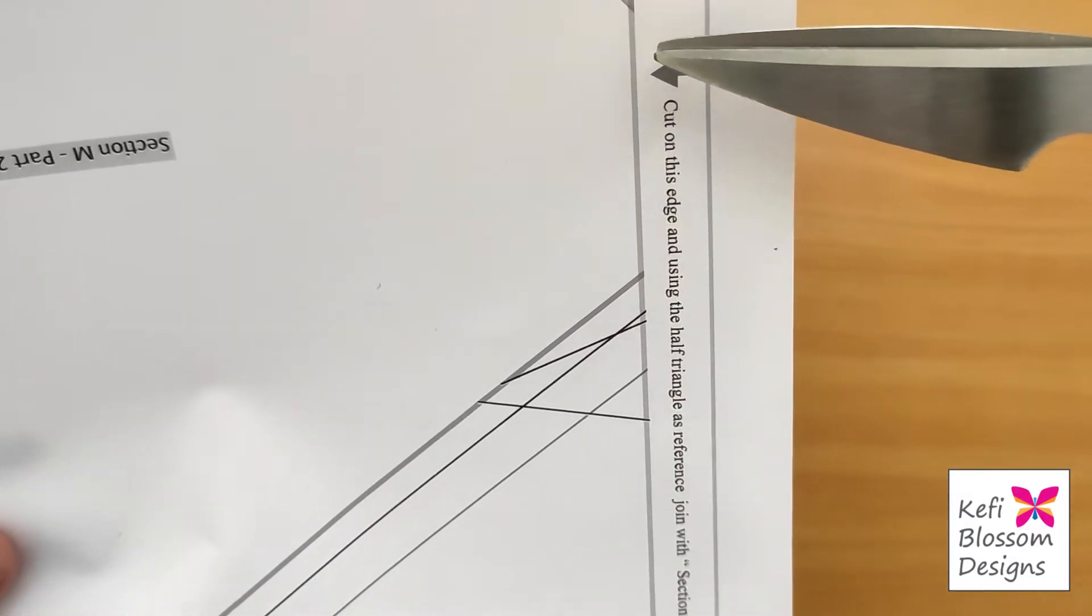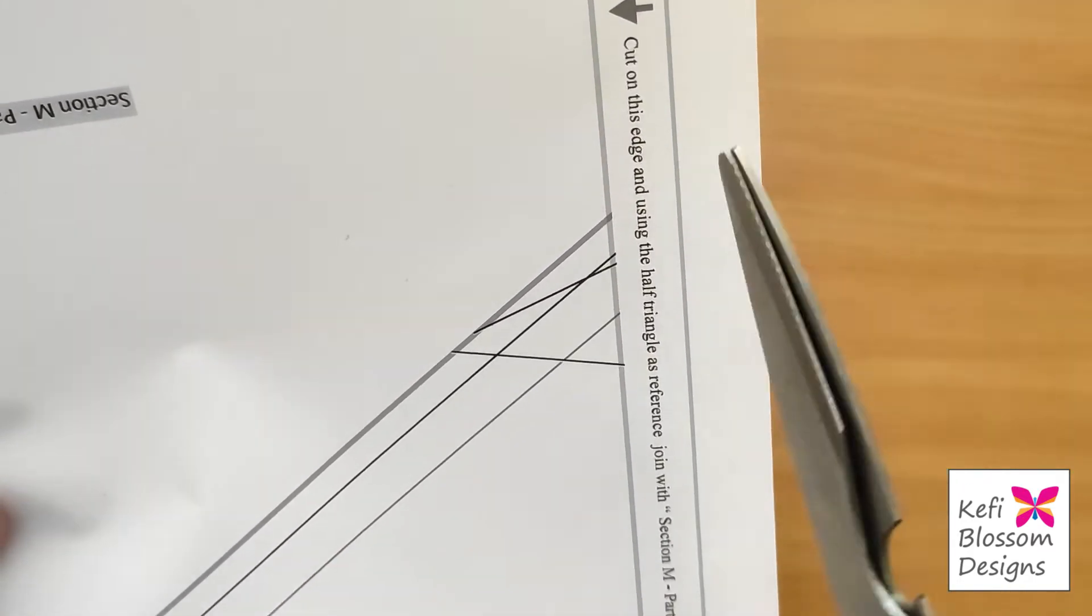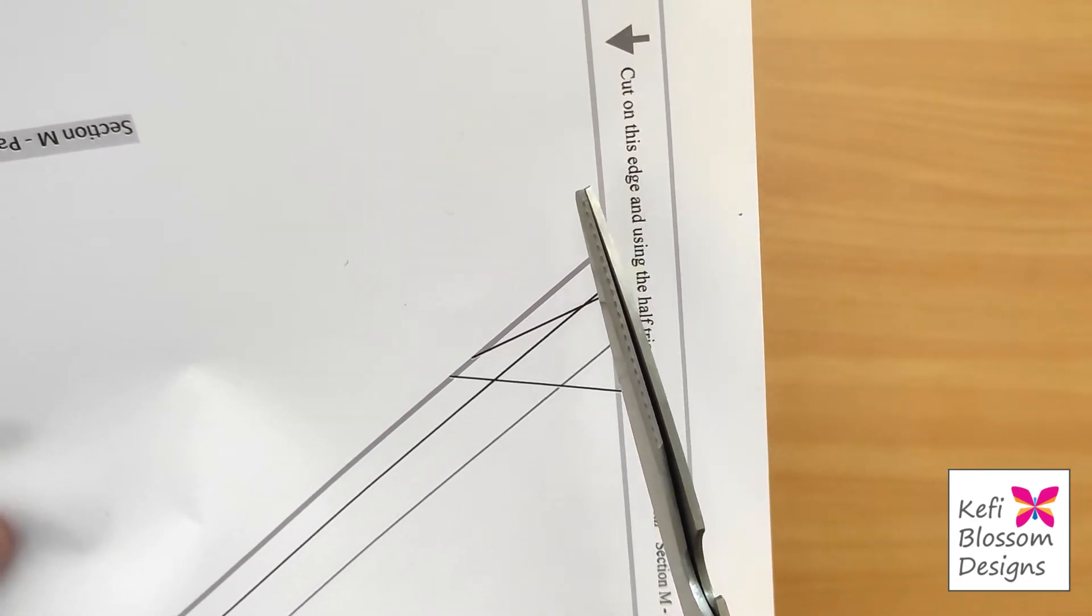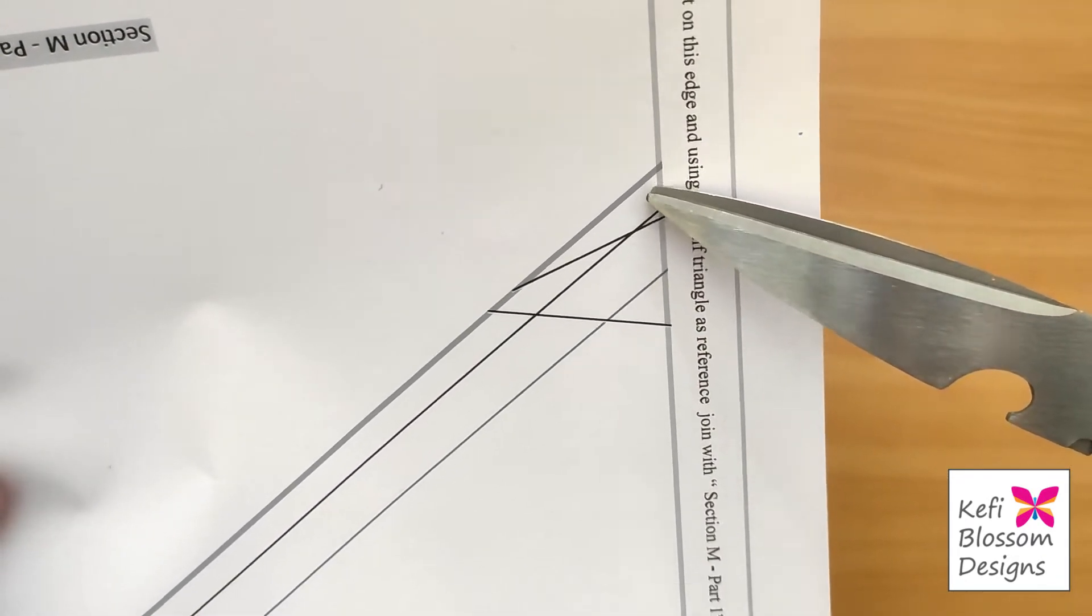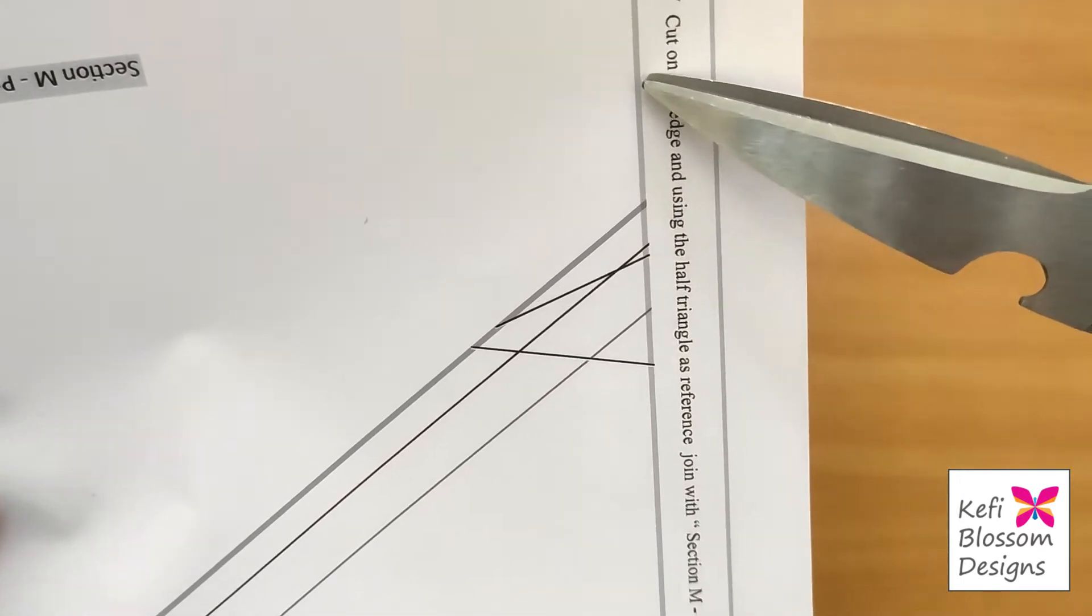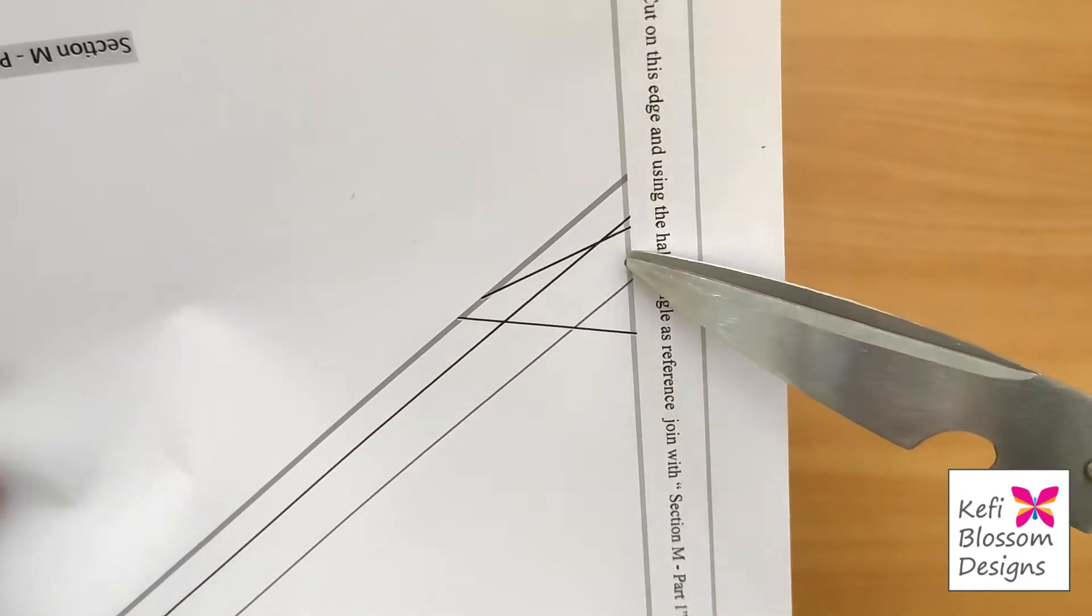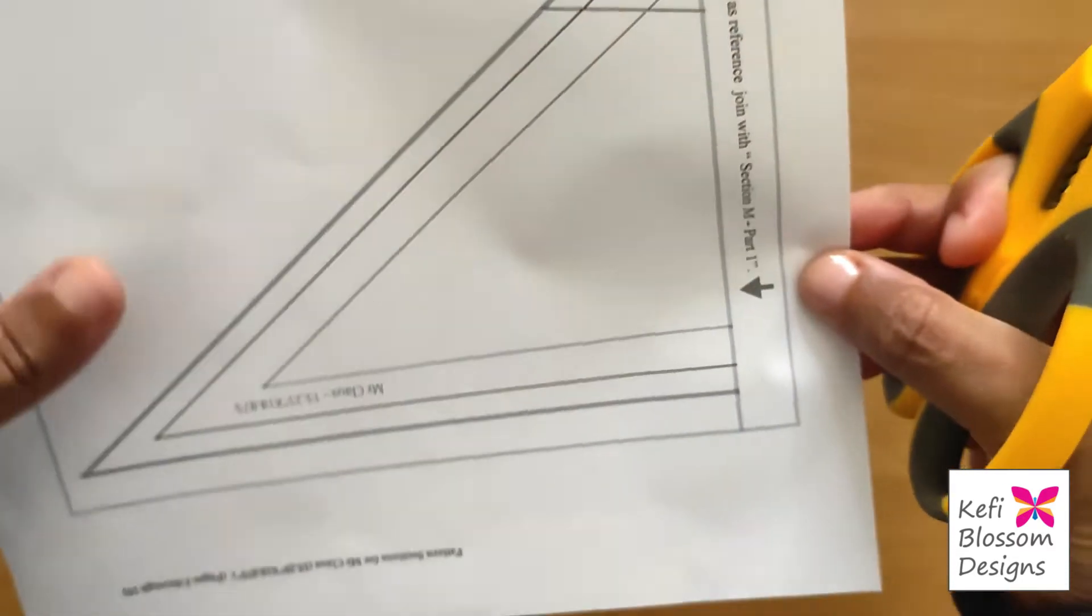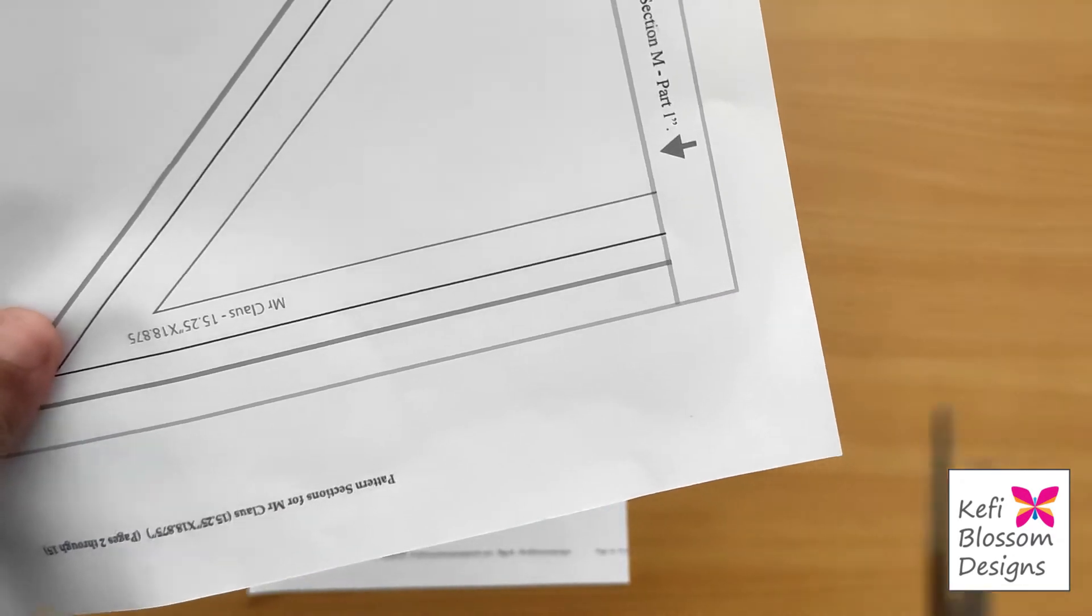When it says cut at this edge, you have to cut at this outer edge of the line. Don't cut in the middle of the line. Don't cut on this side of the line because if you notice, the pattern extends over the line. So this particular line falls within the pattern. So we should not lose this line. So now I'll start cutting at this edge of the line.